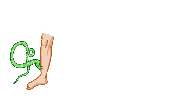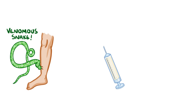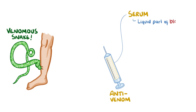Let's imagine for a minute that you've found yourself in the somewhat unfavourable position of having been bitten by a venomous snake. To treat that, you might get injected with antivenom, which is the serum, or just the liquid part of blood, and it's had the coagulation proteins removed.